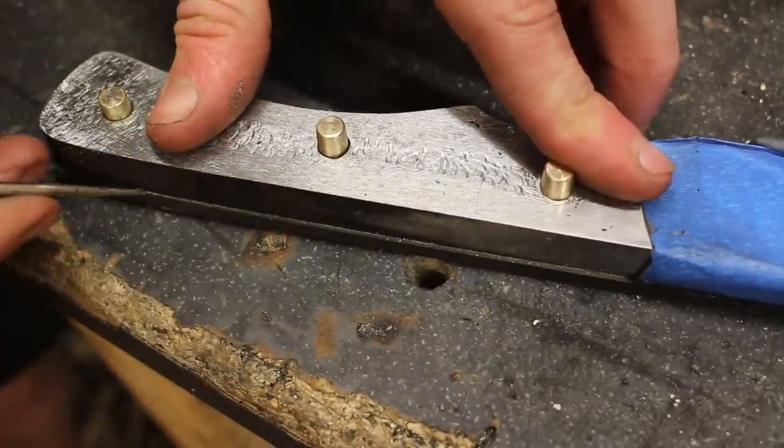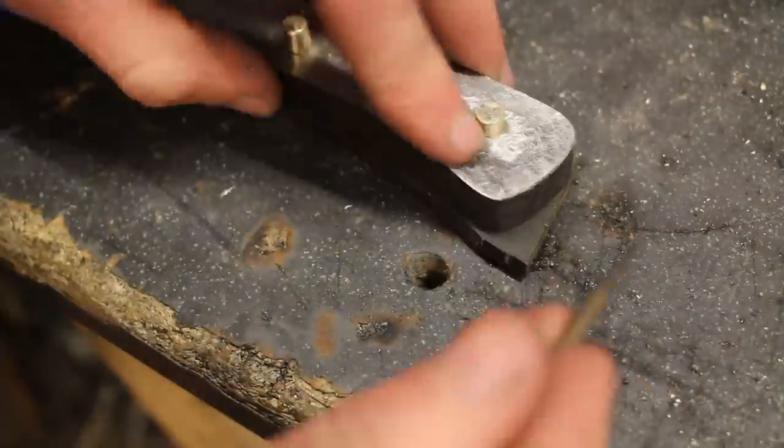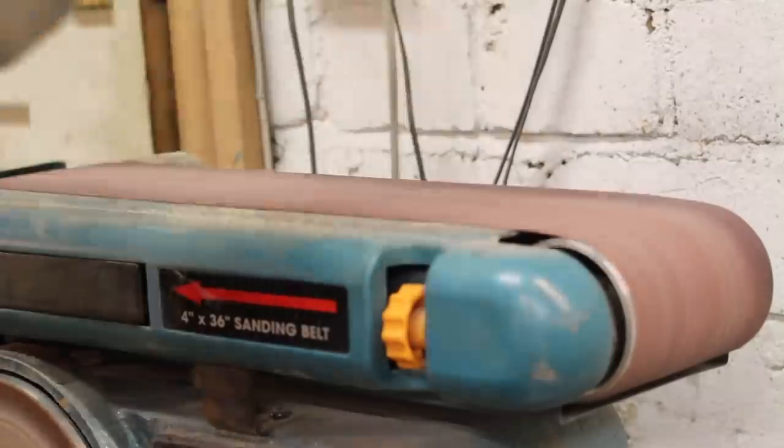With one side of the handle attached I could trace the outline of the steel onto the handle material and then remove that excess using the belt sander.